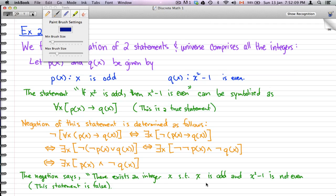This negation says: there exists an integer x such that x² is odd and x² - 1 is not even. This statement is false because it's the opposite of what we have in the first statement which is true.